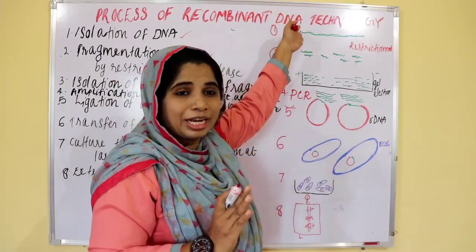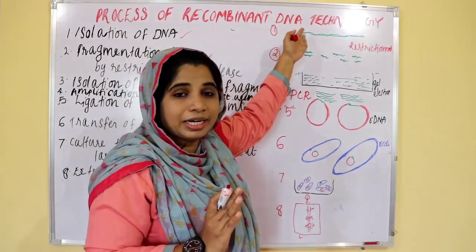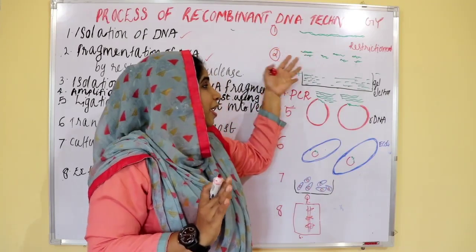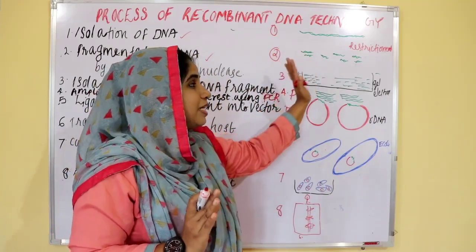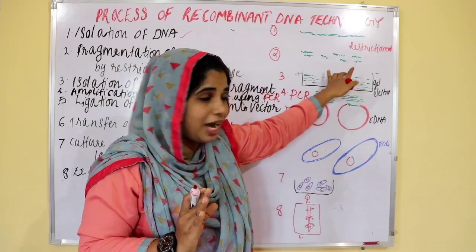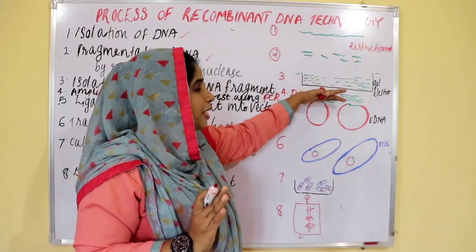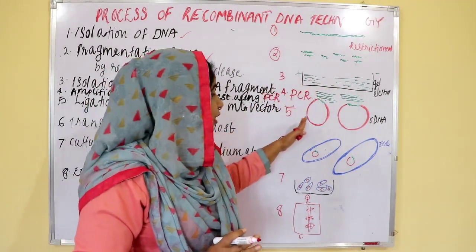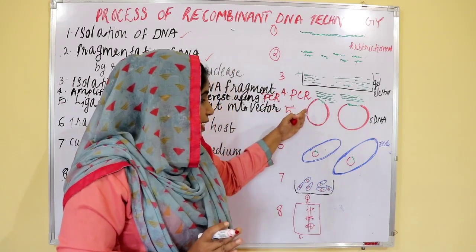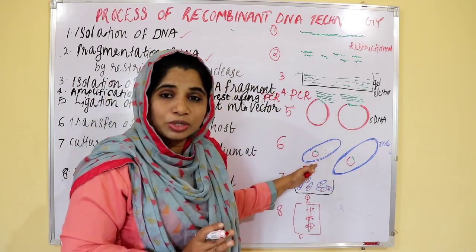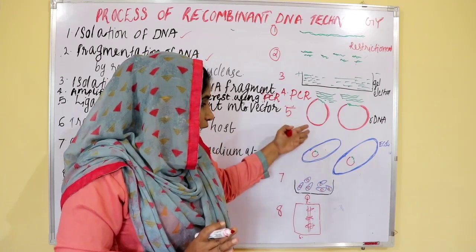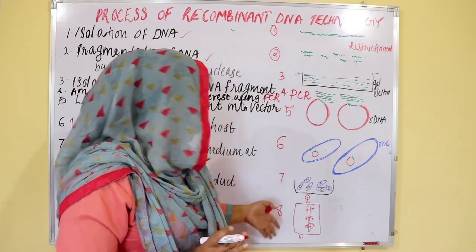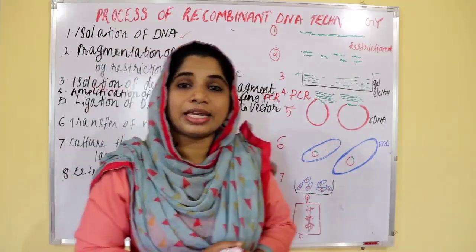First, you need to use a DNA piece — the cut-to-piece. You can extract the pieces and introduce the vectors into host bacteria. The culture is a large-scale product. That's why we use a desired product.